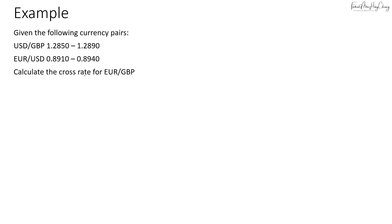Let's say we are asked to calculate the cross rate for euro to pound. In this case, the common currency is on the opposite side of each currency pair, so all you need to do is multiply them directly. I'll take 1.285 × 0.891 for the bid, and 1.289 × 0.894 for the ask. When you multiply them, the dollar will cross out and you'll have euro to GBP.